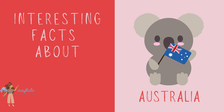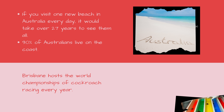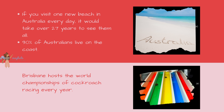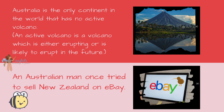Interesting facts about Australia: If you visit one new beach every day, it would take over 27 years to see them all. 90% of Australians live on the coast. Brisbane hosts the World Championships of Cockroach Racing every year — cockroach racing! Australia is the only continent in the world with no active volcano. An active volcano is one that is either erupting or likely to erupt in the future.